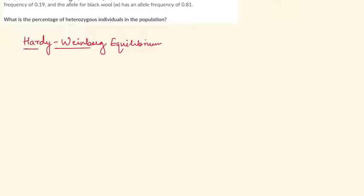Hardy-Weinberg equilibrium is an equation given by Hardy and Weinberg. The equation is similar to the binomial expansion of (a + b)² and equals p² + 2pq + q², and all this is equal to 1. This equation is very important in biology.